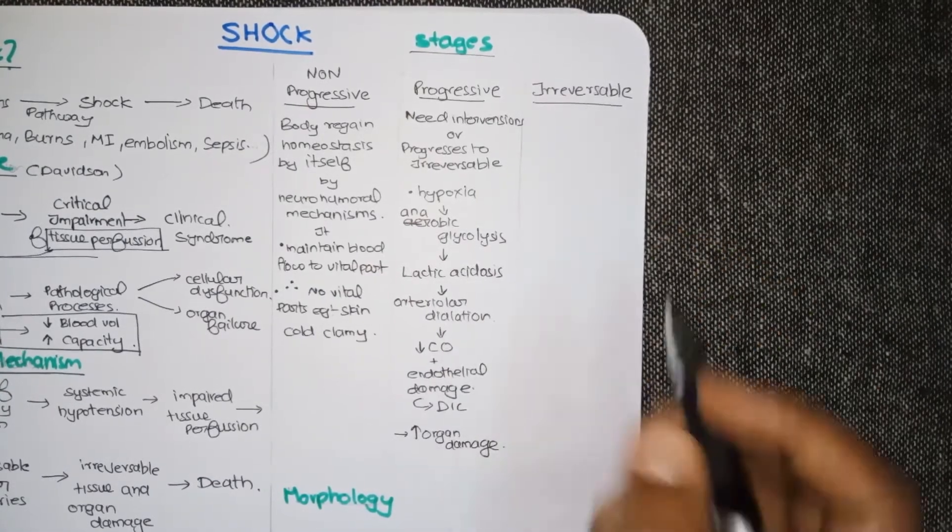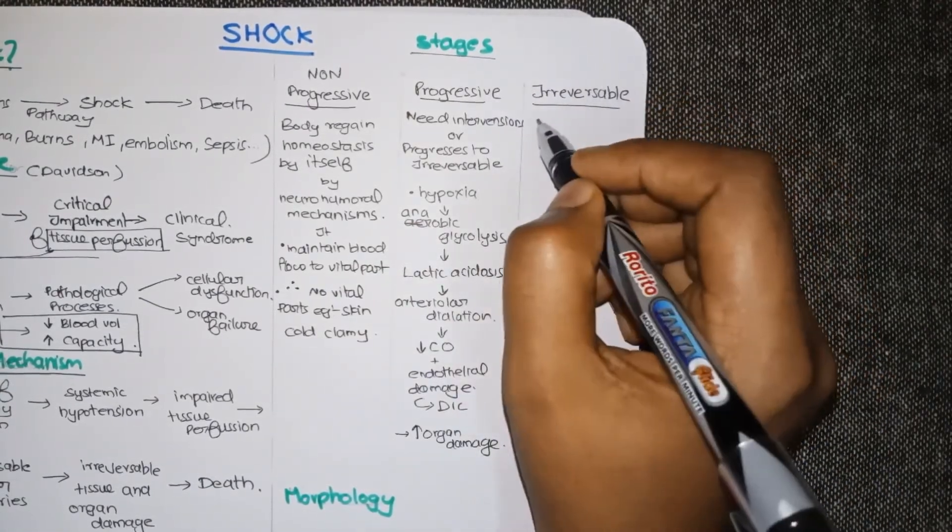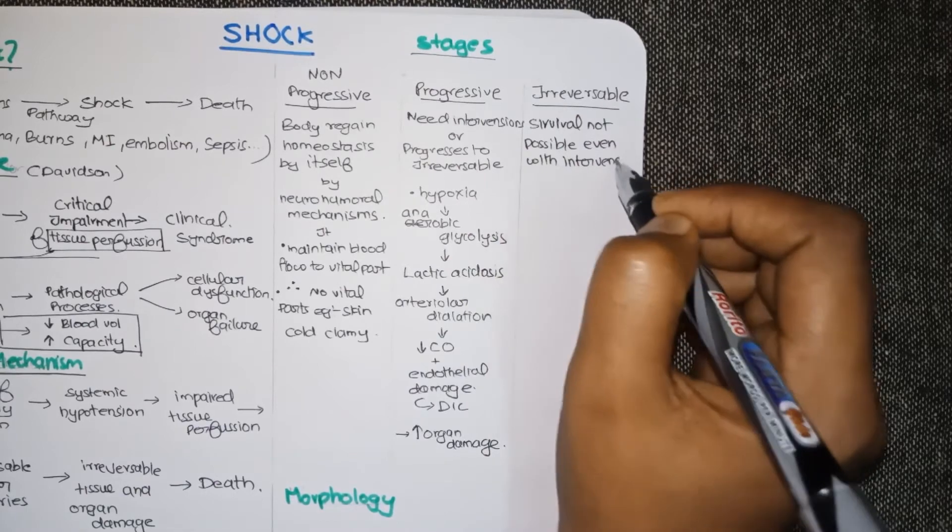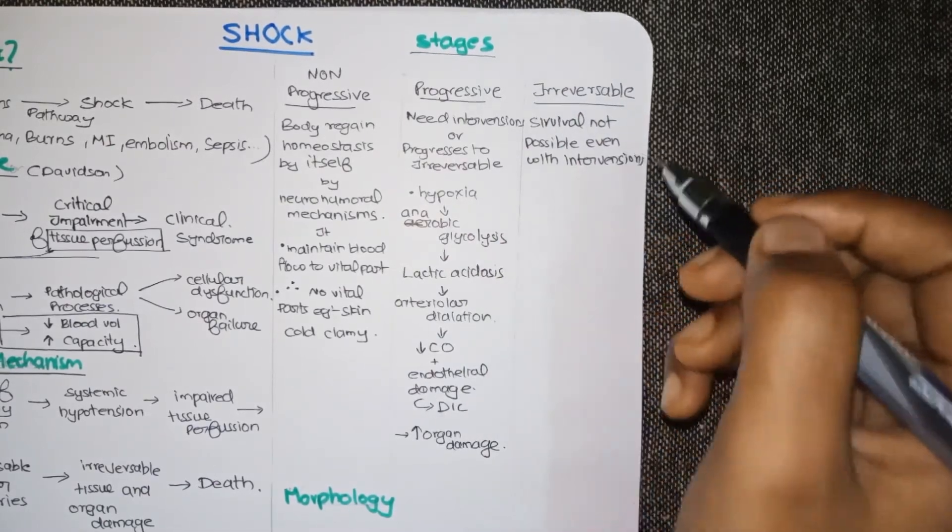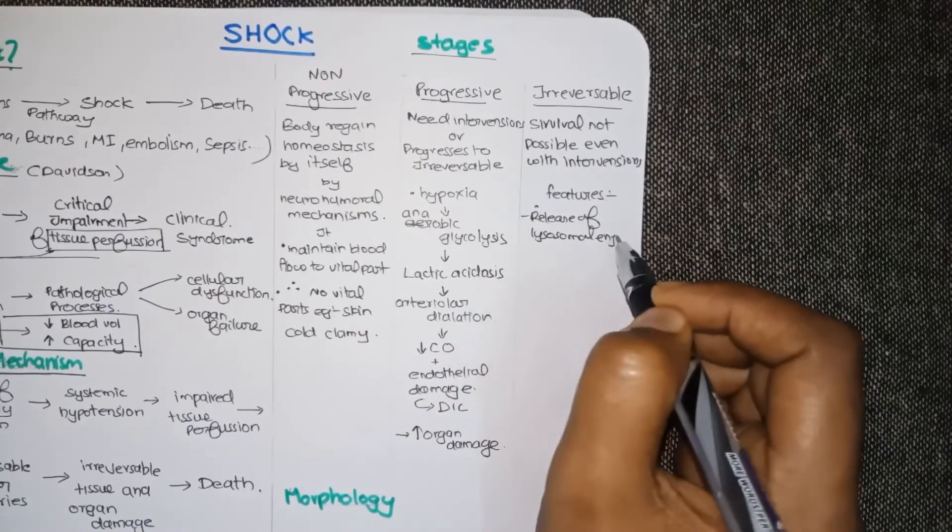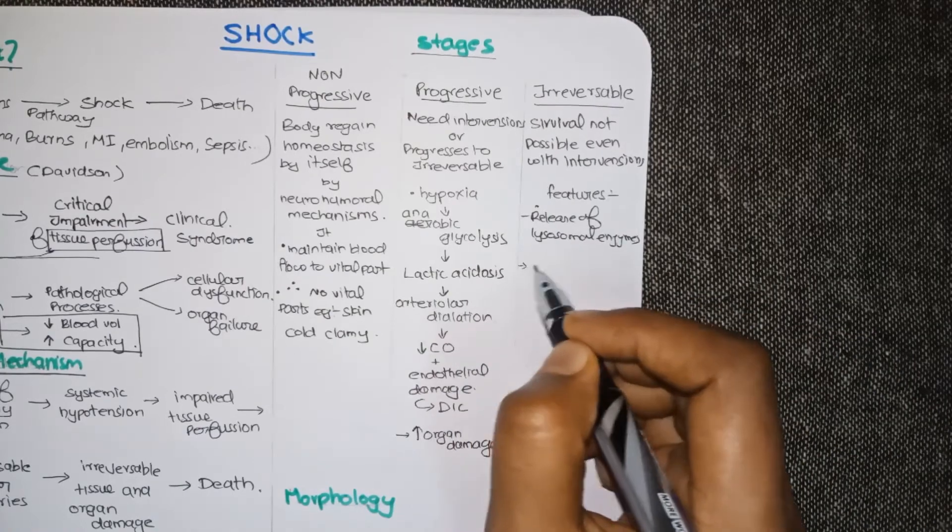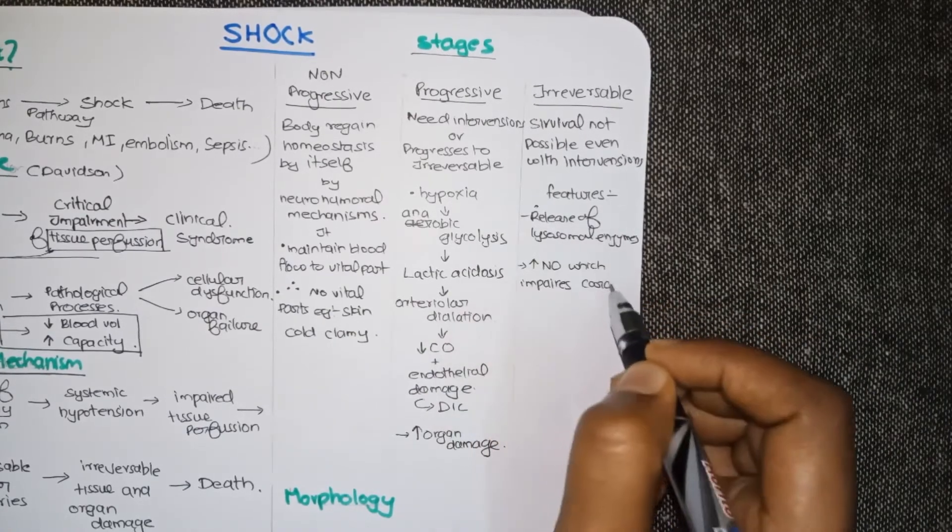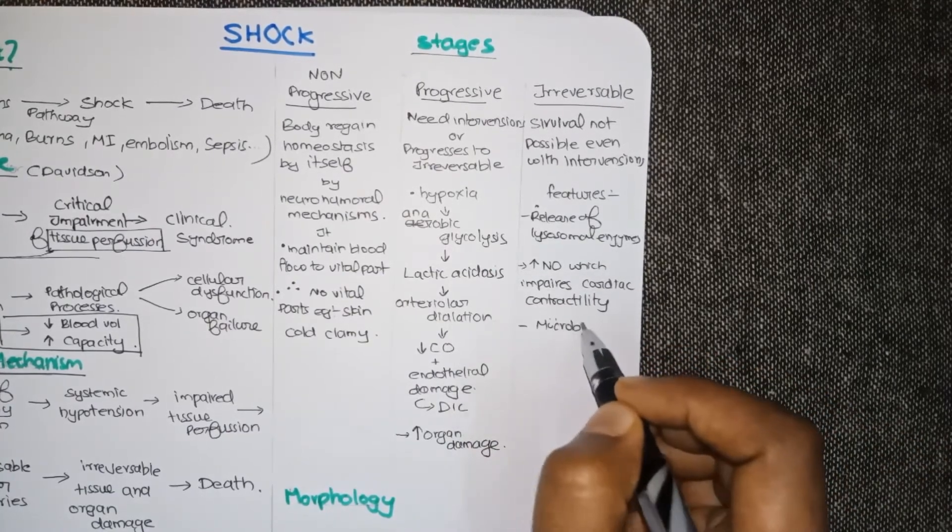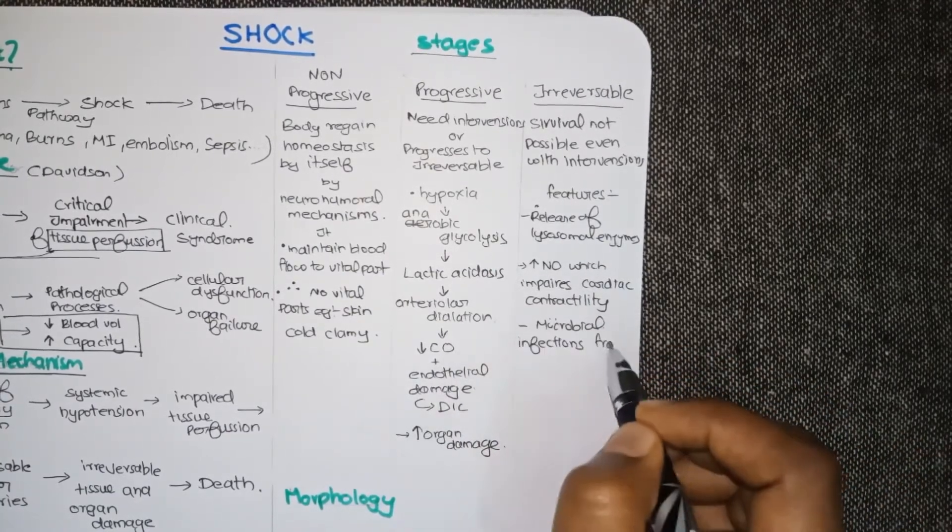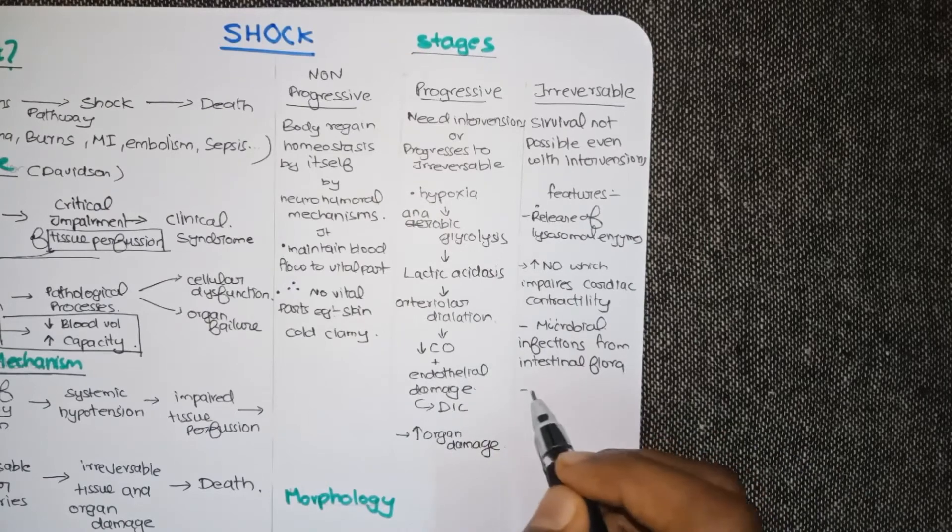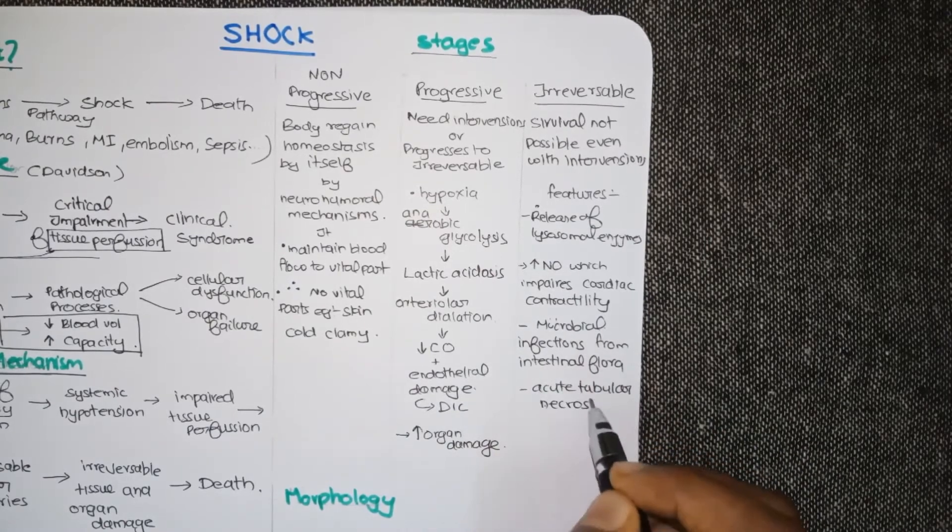At irreversible stage survival is not possible even with interventions. Some of the features of irreversible stage are: there will be release of lysosomal enzymes that can injure the cells, increased nitric oxide release will impair the cardiac contractility. In addition to this the microbial flora in our intestine start to invade and cause infections. And also the kidneys get damaged by acute tubular necrosis.